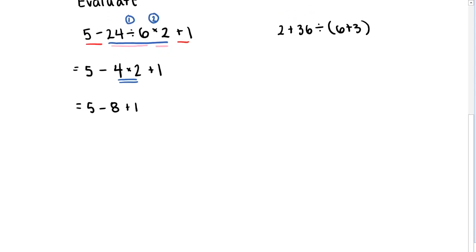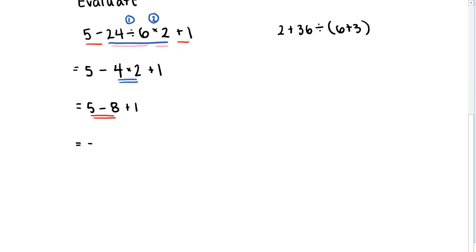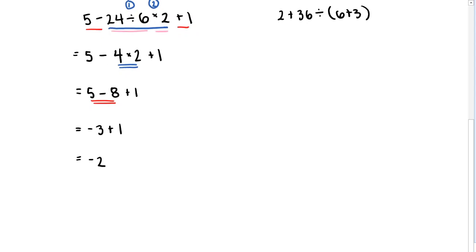Now there's only addition and subtraction, so we perform these from left to right. The subtraction gives us 5 minus 8, and that's going to give us negative 3. Then we add 1, and negative 3 plus 1 is negative 2. If I owe $3 and I have $1, I can pay some of that debt off and I'm left with $2 of debt.